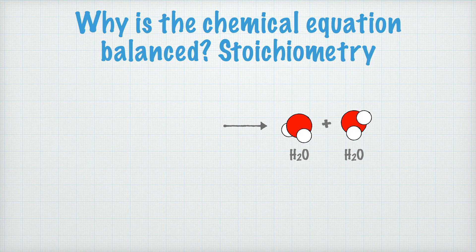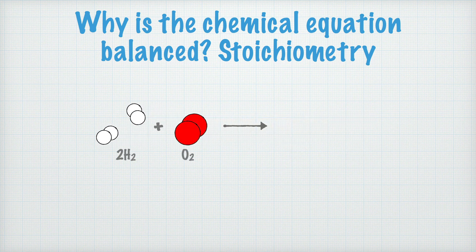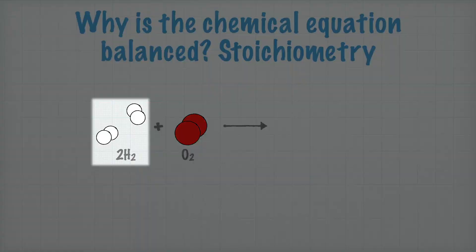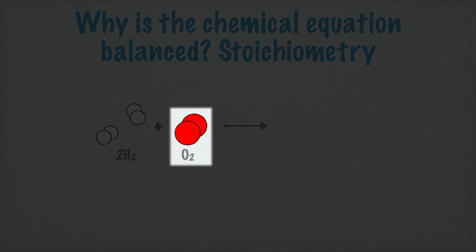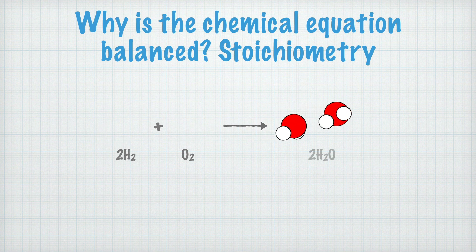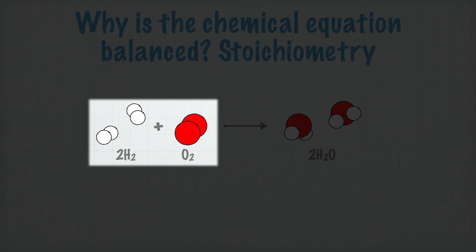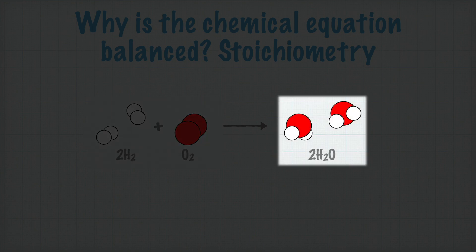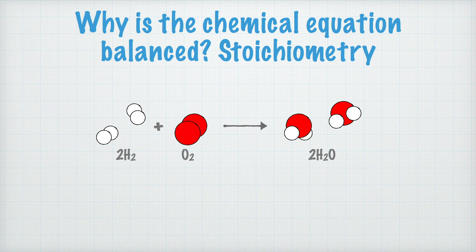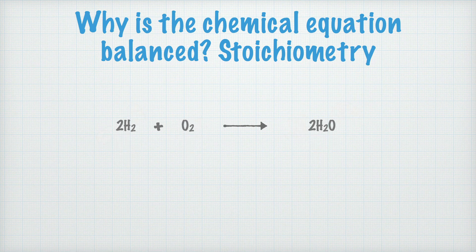We now see that two water molecules form in this reaction. But these extra two hydrogen atoms don't just appear out of nowhere — they must have been there from the beginning too, which means there must be two hydrogen molecules that react with one oxygen molecule, and they turn into two water molecules. Everything on the left side of the reaction arrow turns into everything on the right side — nothing suddenly disappears or appears out of nowhere.